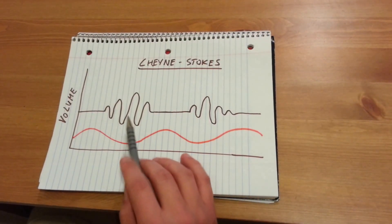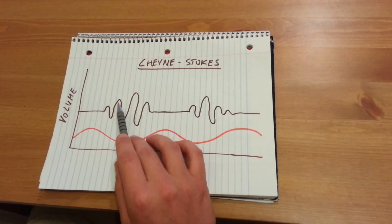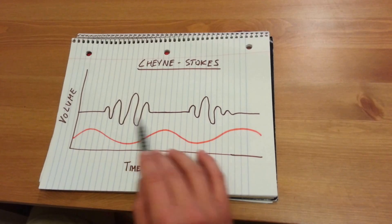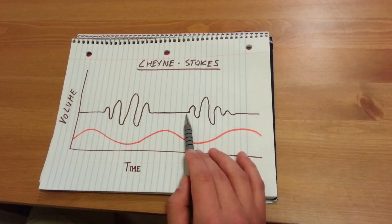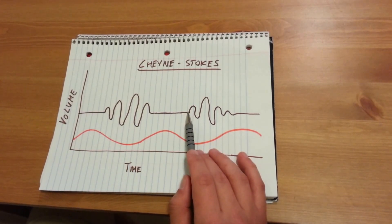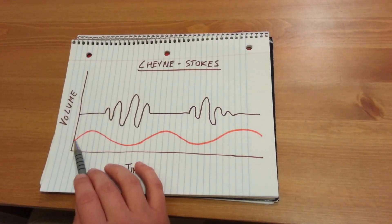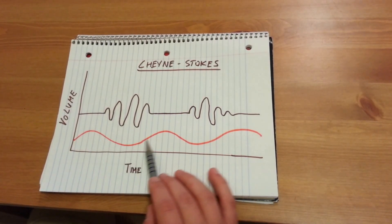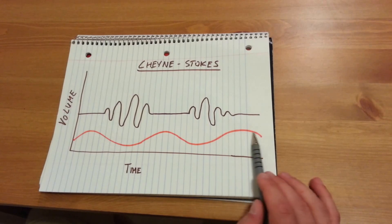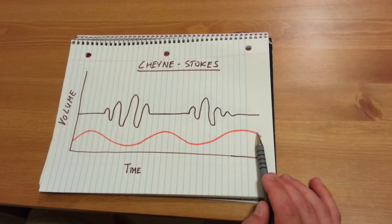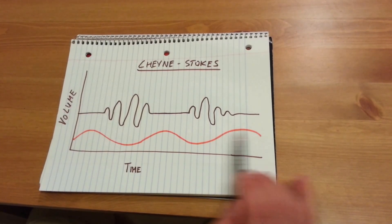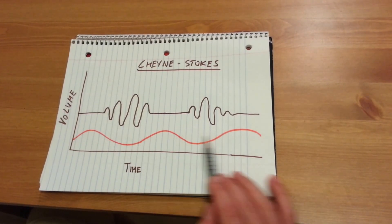In this drawing, compare the deep fast pattern and apneic pattern of Cheyne-Stokes respirations to a slow, normal, regular respiration pattern shown here in the orange.